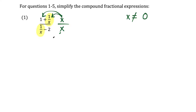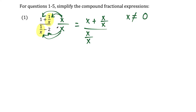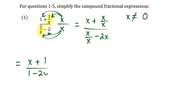So we distribute top and bottom. For the top, we have x times one is x, plus x times one over x is going to give us x over x. And in the denominator, we have x times one over x is x over x, and then x times negative two is minus two x. So the result is x plus one, because x over x is one, and then we have minus two x.